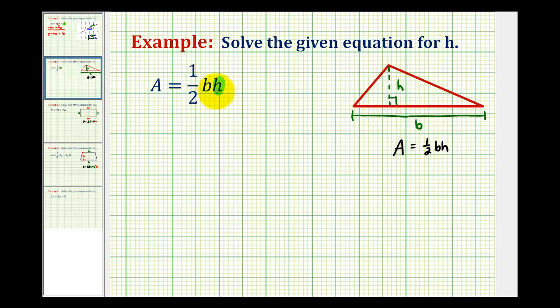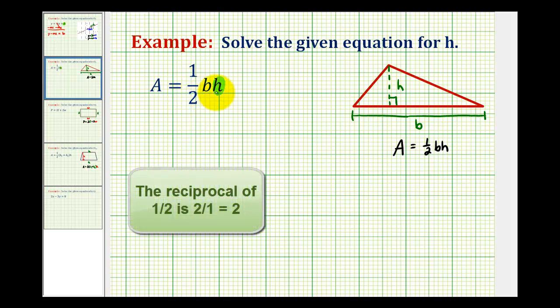One-half, b, and h are attached by multiplication. Normally to isolate h we would divide, but if we want to isolate bh first, instead of dividing by one-half, we would multiply by the reciprocal. In this case, we'll multiply both sides by 2 to isolate b and h.